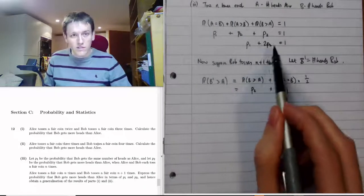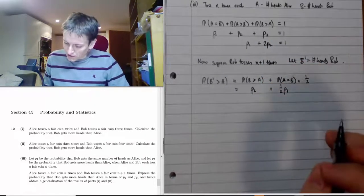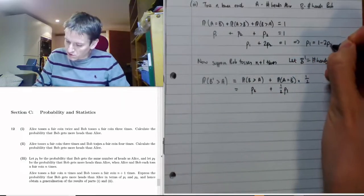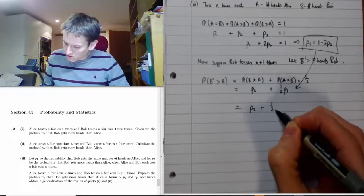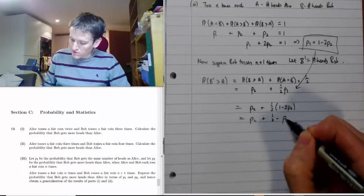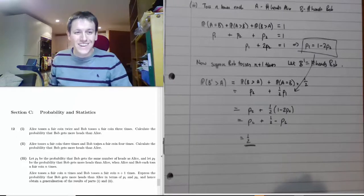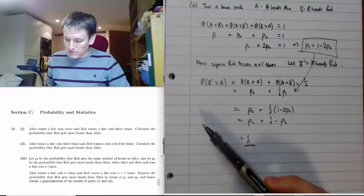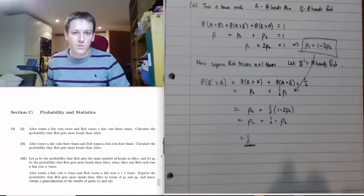So P(B' > A) = p2 + p1/2. We haven't shown this equals a half yet, but p1 and p2 satisfy p1 + 2p2 = 1, so p1 = 1 − 2p2. Substituting: p2 + one half times (1 − 2p2) = p2 + one half minus p2 = one half. We've shown that for any value of n, the probability that Bob gets more heads in n+1 tosses than Alice gets in n tosses is always equal to one half — the generalization we were looking for.